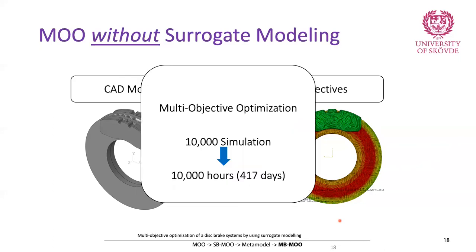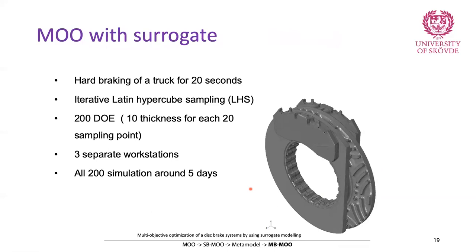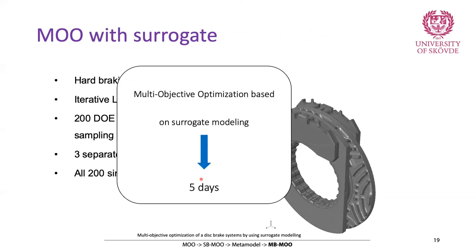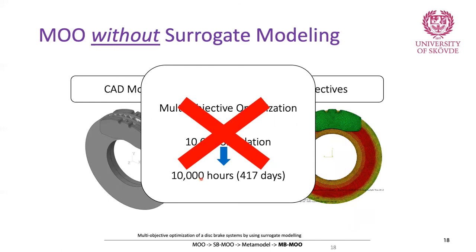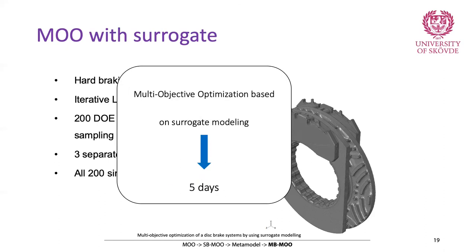In order to find optimal solutions, we would have had to run 10,000 simulations. With each simulation taking one hour, that would be 10,000 hours — around 417 days. That's not practical. So we again used metamodels. We created a design of experiment with 200 design points and ran 200 simulations. Using three separate workstations running three simulations simultaneously, all 200 simulations took around five days. Instead of 417 days with pure simulation-based optimization, we ran the study in only five days — a very significant improvement.